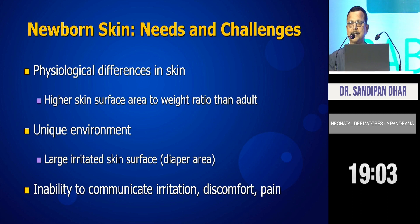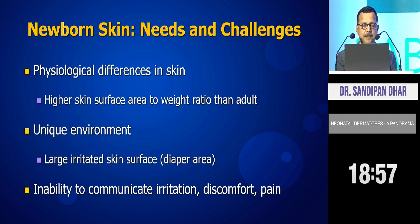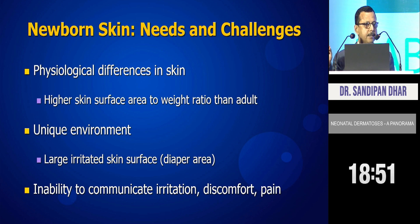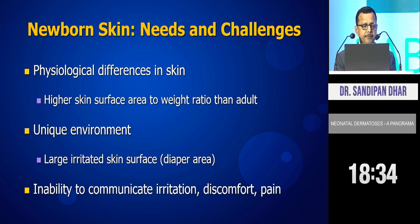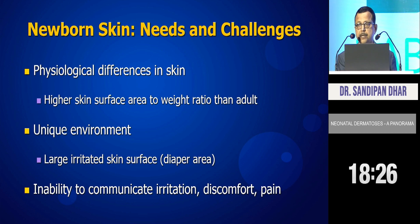A very important thing is that the skin of a baby is much different from adults. For all practical purposes — for therapy, for neonatal or pediatric dermatosis — when you are applying something, please remember that the body surface area is much higher compared to weight. So unit area of absorption is much more than in the adult, particularly for corticosteroid-containing preparations. The diaper area is an area under occlusion, so a lot of absorption occurs there. For diaper dermatitis, you should be careful about using corticosteroids.